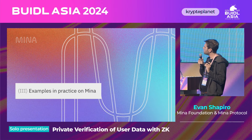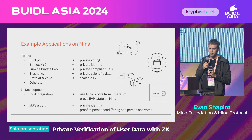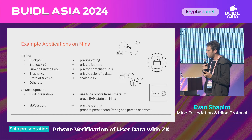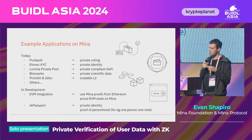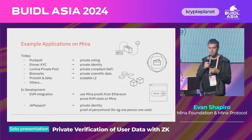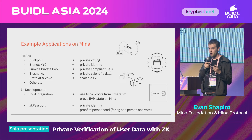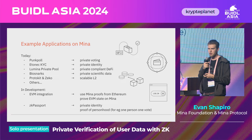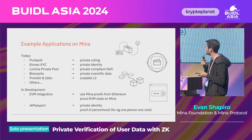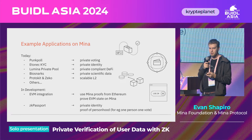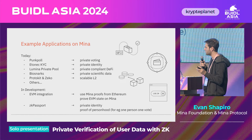I wanted to share some examples in practice on Mina. Mina is currently on mainnet and offers a proof of its blockchain for payments, but there's about to be an upgrade that will unlock all these kinds of programmable applications as well — basically zero knowledge smart contracts, pretty soon for Mina's mainnet. There's been a bunch of teams building things in this ballpark of privacy and zero knowledge proofs on Mina.